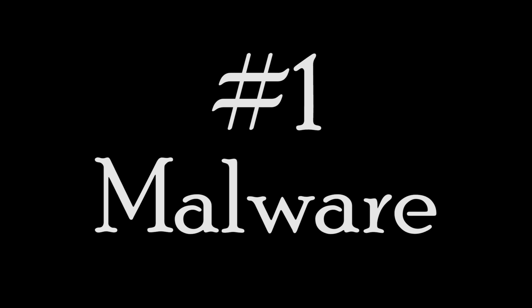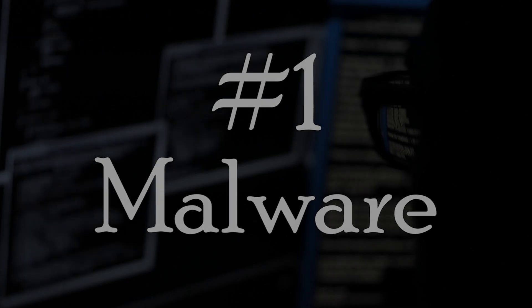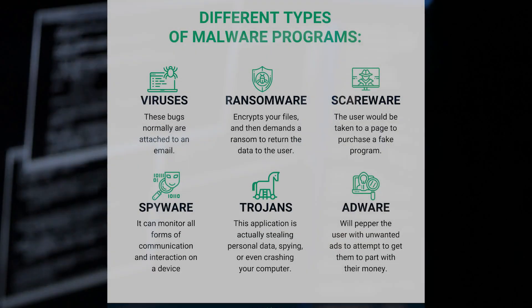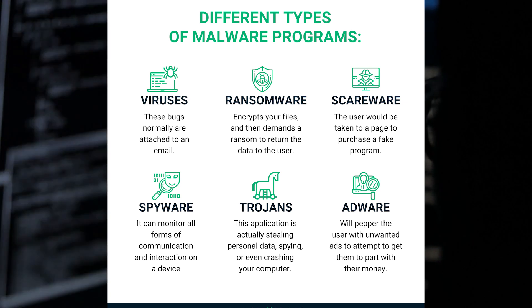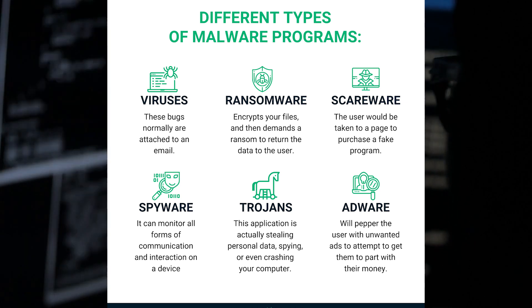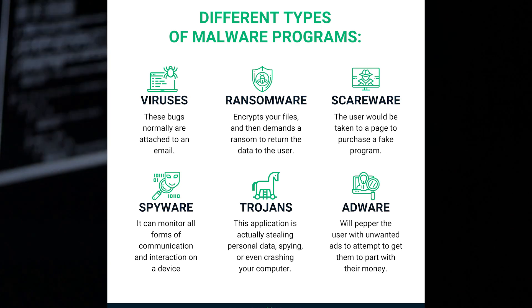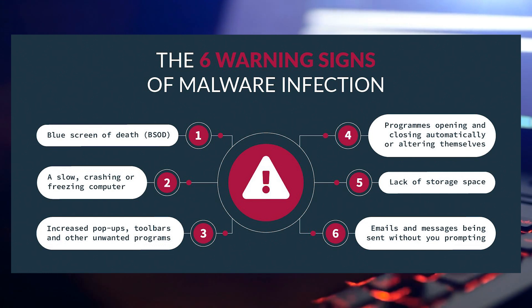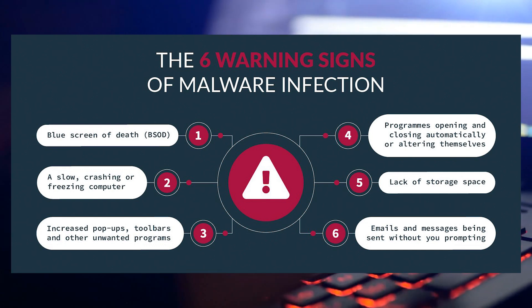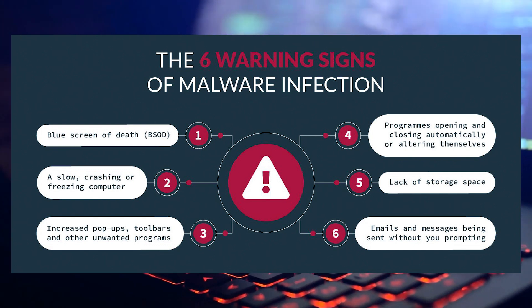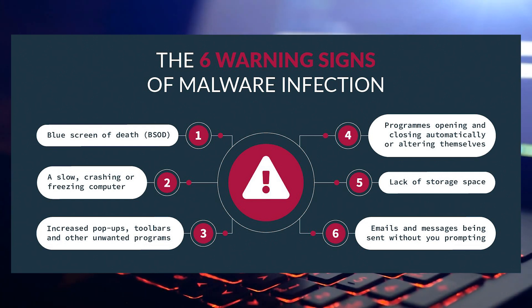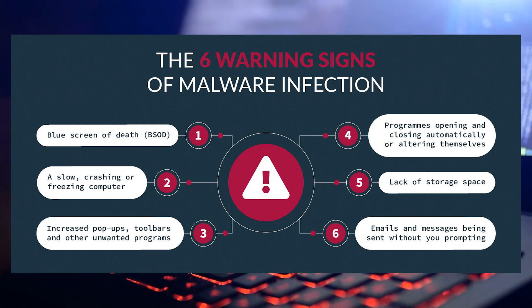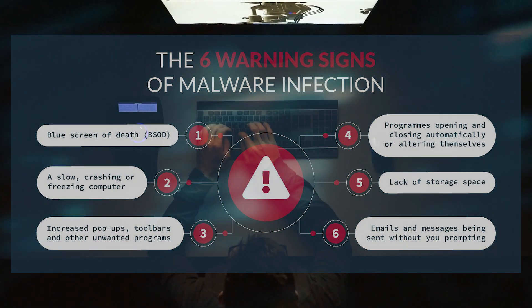Number one is malware. The term malware encompasses various types of attacks, including spyware, viruses, and worms. Malware generally uses a vulnerability to breach a network by a user clicking on a planted or dangerous link in an email attachment, which is then used to install malicious software inside the system. This type of software can deny access to critical components of the network, obtain information by retrieving data from the hard drive, disrupt the system, or even make it inoperable.